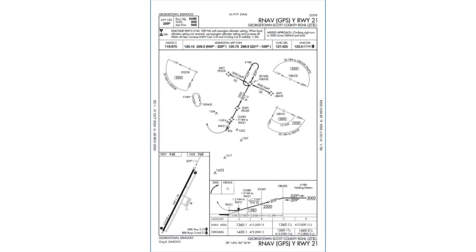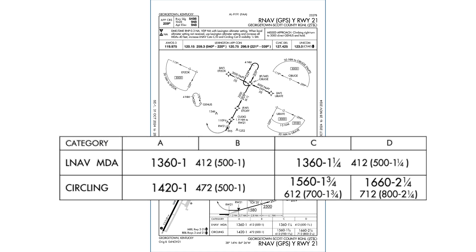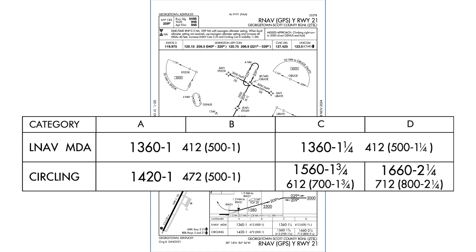It's based on two things. First, the MDA — but notice there are more than one MDA. The LNAV minimums are the same for all category aircraft: 1360.